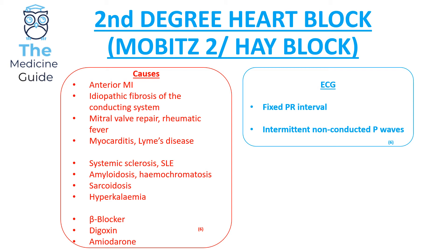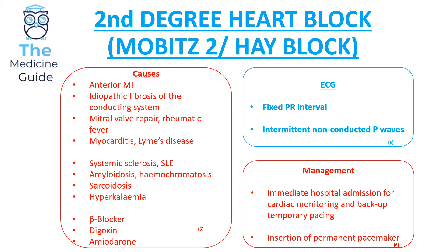The causes of second degree heart block Mobitz type 2 include an anterior MI, idiopathic fibrosis of the conducting system, mitral valve repair, rheumatic fever, myocarditis, Lyme disease, systemic sclerosis, SLE, amyloidosis, haemochromatosis, sarcoidosis, hyperkalaemia, and medications such as beta blockers, digoxin, and amiodarone. Management requires immediate hospital admission, cardiac monitoring, and backup temporary pacing initially, followed by a permanent pacemaker.